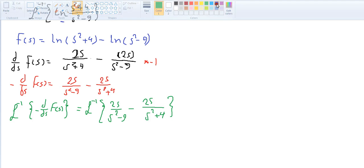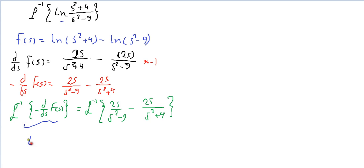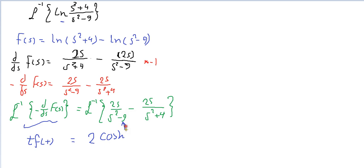We know the inverse Laplace of these terms. The form s/(s² - ω²) corresponds to cosine, so 2s/(s² - 9) gives 2 cosine(3t) since ω = 3. Similarly, s/(s² + 4) is also cosine form, giving 2 cosine(2t) since ω = 2. The 2 is a constant factor taken out front.